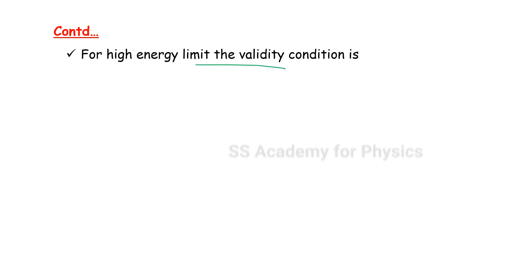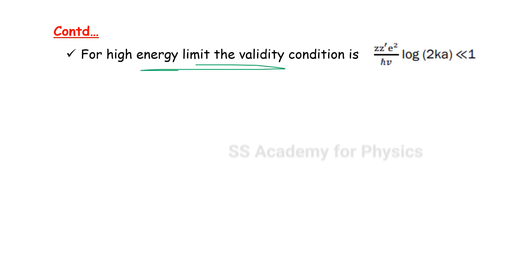For the high energy limit validity condition of the Born approximation in the screened Coulomb field: the low energy condition is ZZ'e² / (ℏv) much less than 1. For the high energy limit, the condition is log(2ka) much less than 1 — wait, much greater than 1. These are the validity conditions for the screened Coulomb potential.